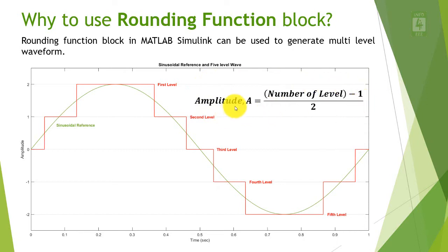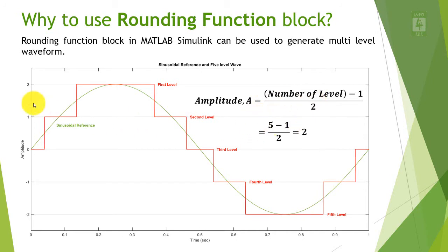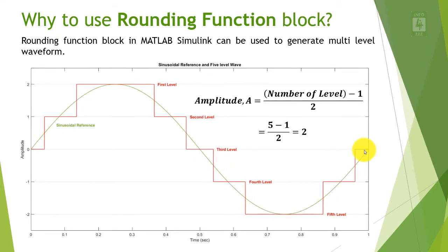As we are generating a 5-level waveform, the amplitude of the sinusoidal waveform should be 2. Hence we selected this amplitude. By changing the amplitude of the sinusoidal waveform, we can generate a multilevel waveform with any number of levels.